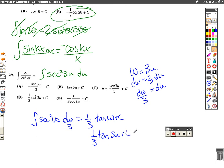Let's just look for that one. 1 third tan of 3u plus c, option d. All right, guys. Good luck studying.